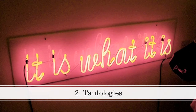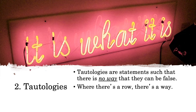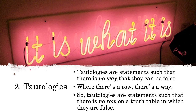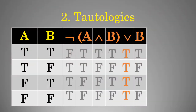The previous example was a tautology, so let's discuss what that is. Tautologies are statements such that there is no way they can be false. Recall: where there's a row, there's a way. Therefore, tautologies are statements such that there is no row on a truth table in which they are false — and that's exactly what we saw with our example.